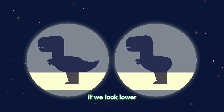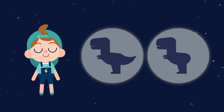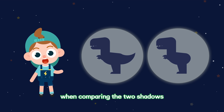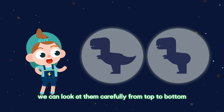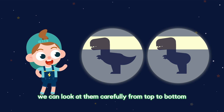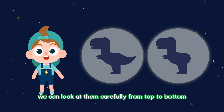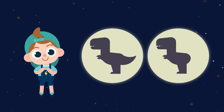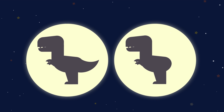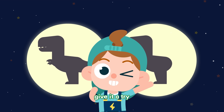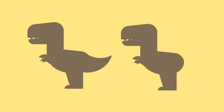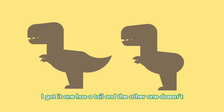If we look lower, they are the same here too! When comparing the two shadows, we can look at them carefully from top to bottom! Give it a try! I got it! One has a tail, and the other one doesn't!